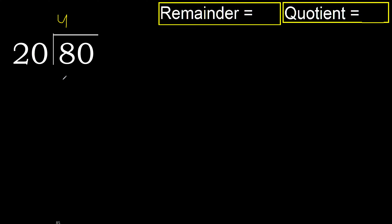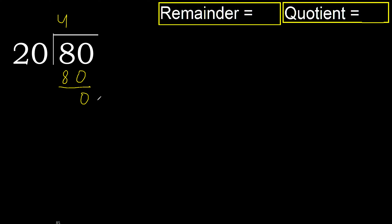Multiplied by 4: 80 is not greater. Subtract — 80 minus 80 equals 0. Next digit: there is no number, therefore finish.